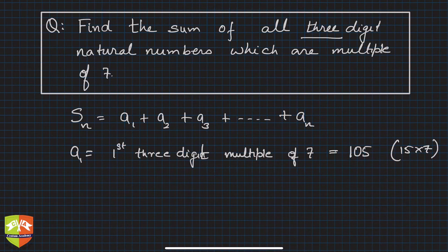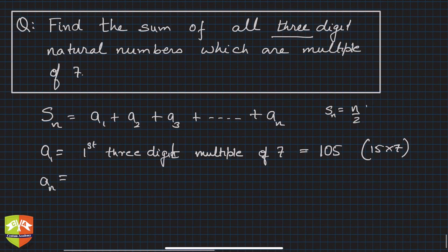What will be an? Why do we need an? We will not be able to do away with it because for the sum formula, if you see, Sn requires n by 2 times 2a plus n minus 1 times d. So in finding Sn we do require n.